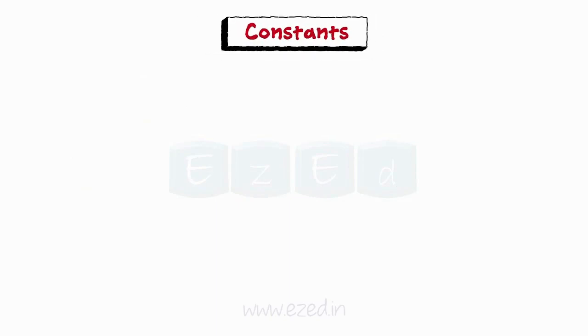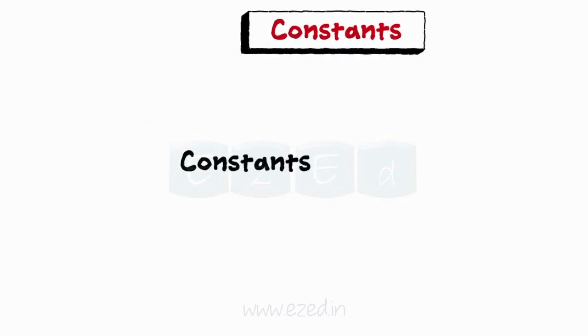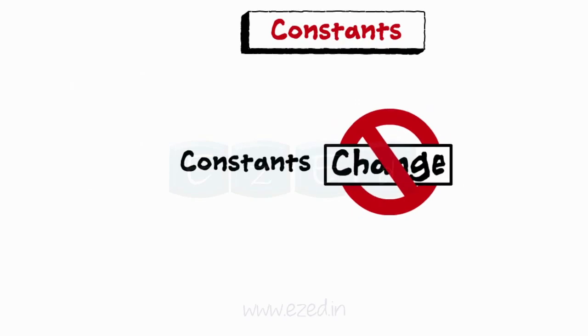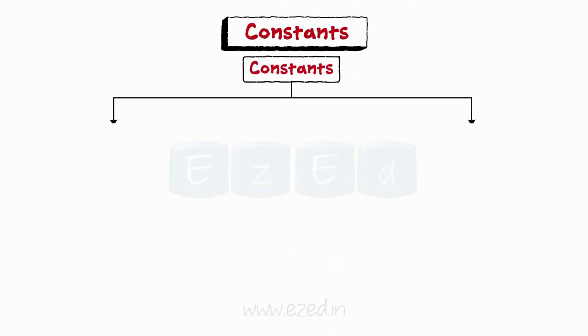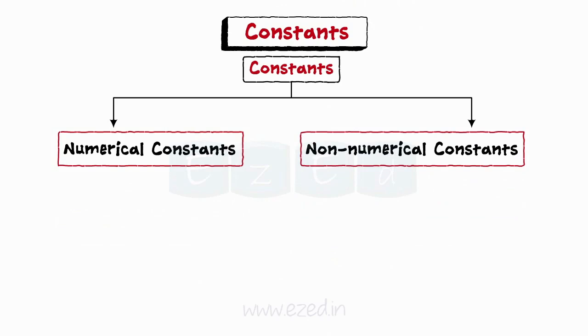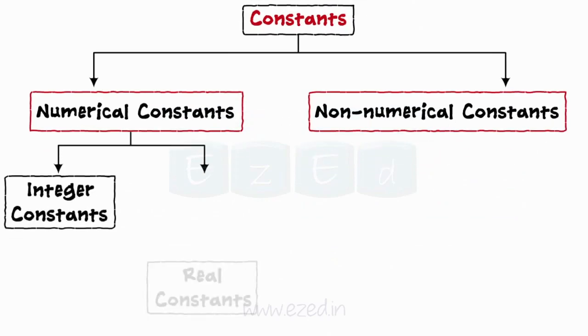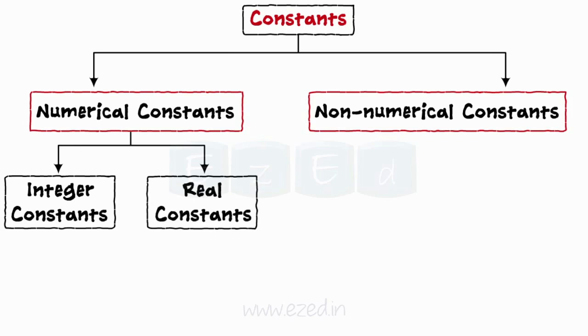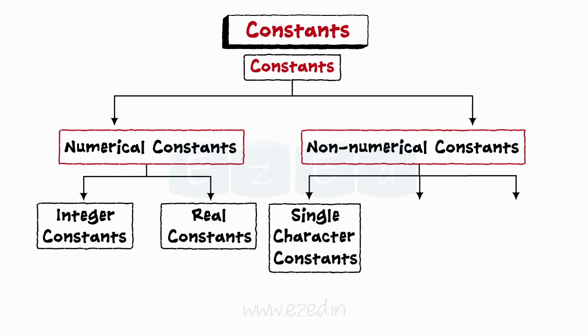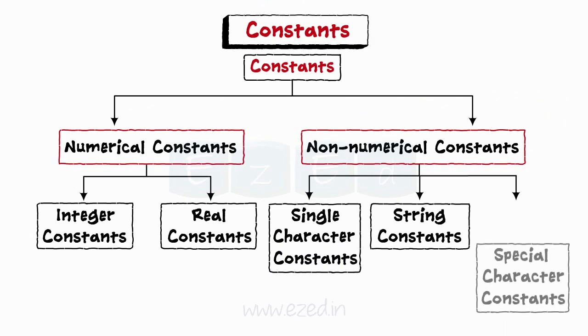Next we will learn constants. Constants are those values which do not change. They remain fixed throughout the program. Constants are classified as numerical constants and non-numerical constants. Numerical constants are further classified into integer and real constants, while non-numerical constants are divided into single character, string, and special character constants.